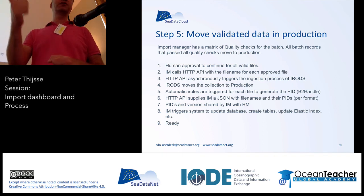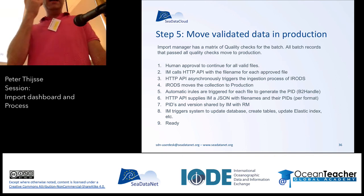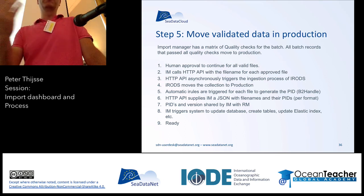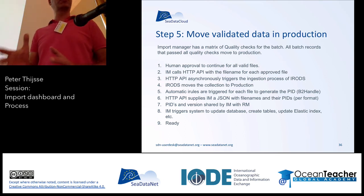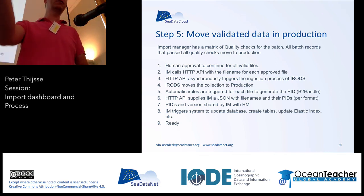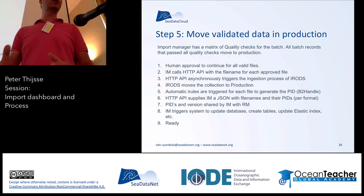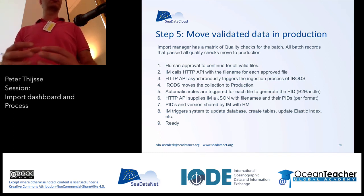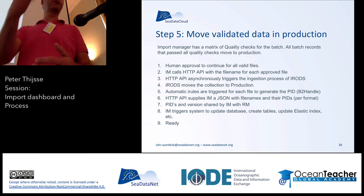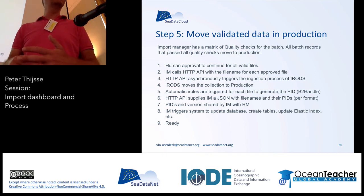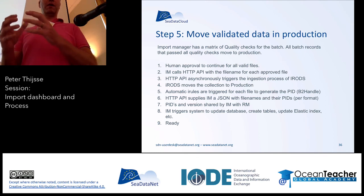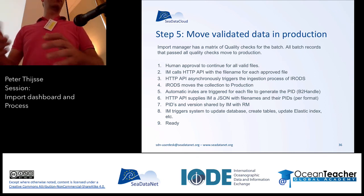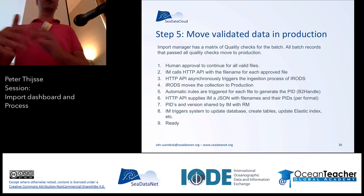Because for the data products, if a data product was created two years ago, now you only have the latest version of the data file available. But in the future, when a data product is created now and in two years time there's another one, you know exactly from which version of the CDI files and of the data the data product was created. So that's for provenance, for FAIR — as Dick presented — really important for the FAIR-ness of that data product to know which files were used, and of course additional information on which processing was applied.